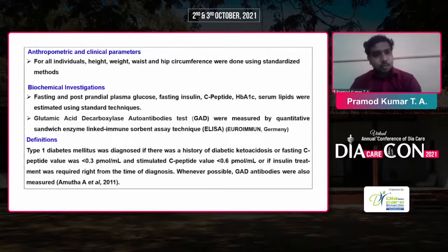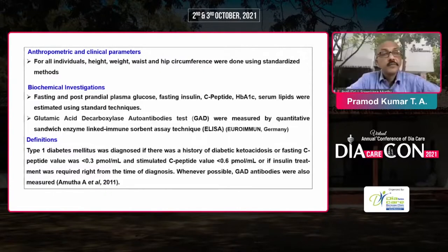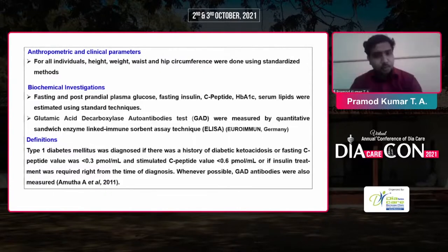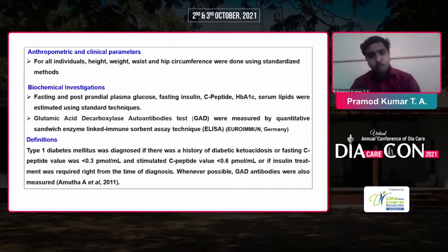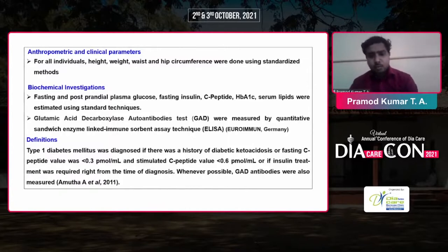Anthropometry and clinical parameters for all individuals — height, weight, waist, and hip circumference — were done using standardized methods. Biochemical investigations including fasting and postprandial glucose, C-peptide, HbA1c, and serum lipids were done using standardized techniques. GAD antibodies were measured using ELISA. Type 1 diabetes was diagnosed if there was a history of diabetic ketoacidosis, or fasting C-peptide less than 0.3 nmol/mL and stimulated value of 0.6 nmol/mL, or if insulin treatment was required from the time of diagnosis.